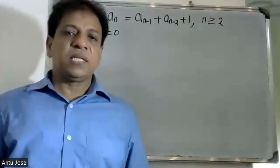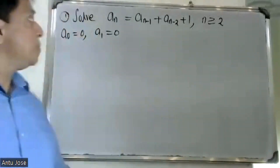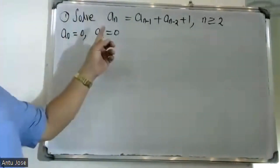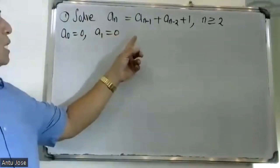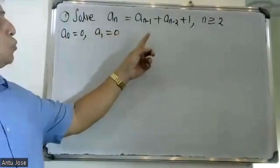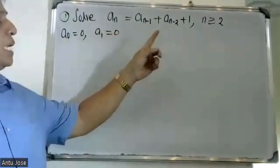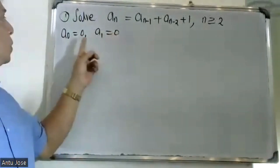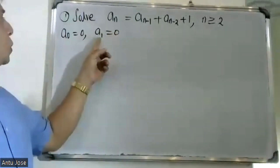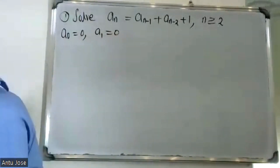Good morning students. The question is: a(n) equals a(n-1) plus a(n-2) plus 1, for n greater than or equal to 2, with initial conditions a(0) equal to zero and a(1) equal to zero.